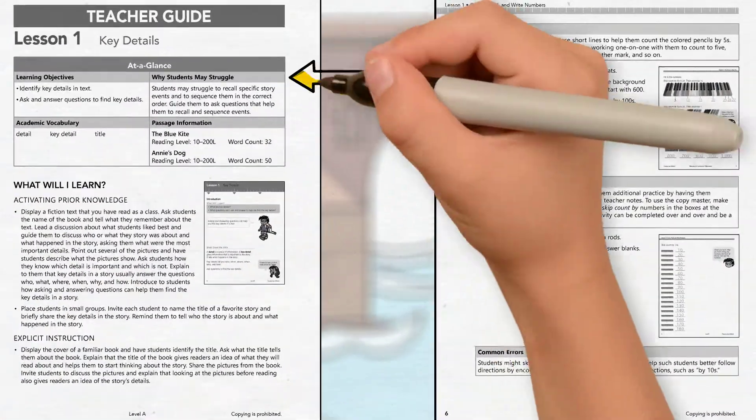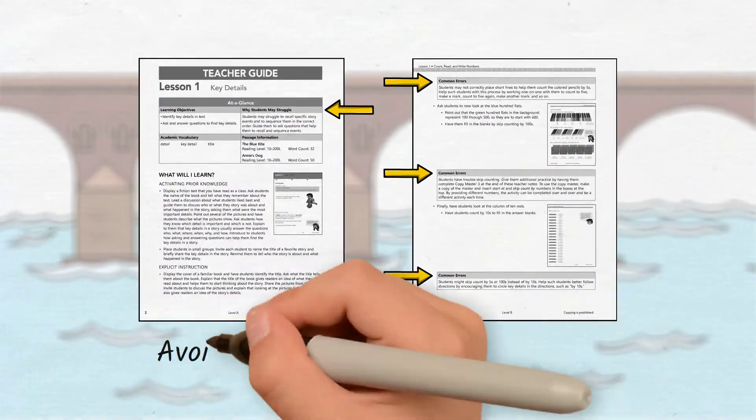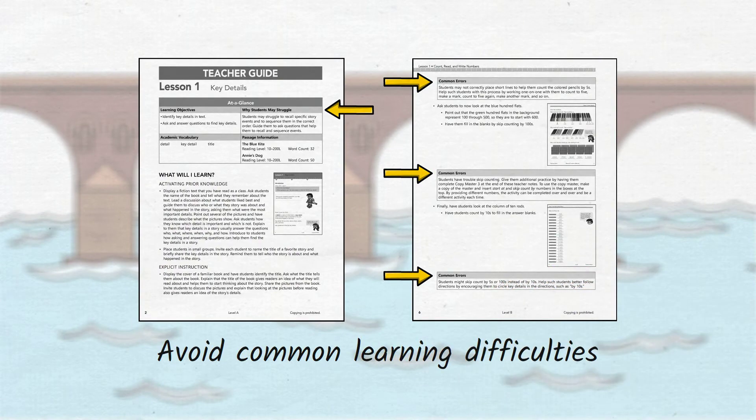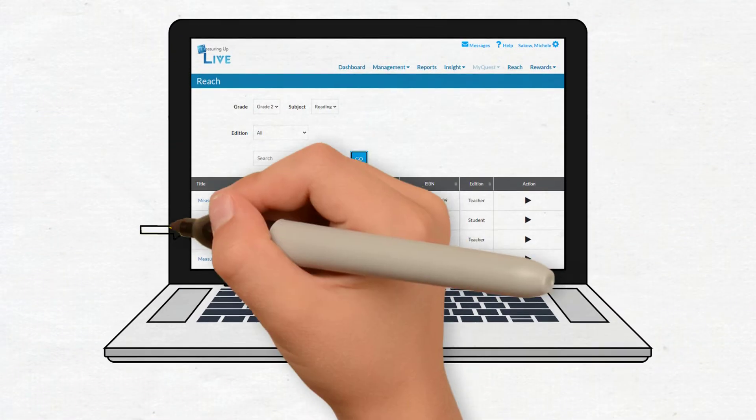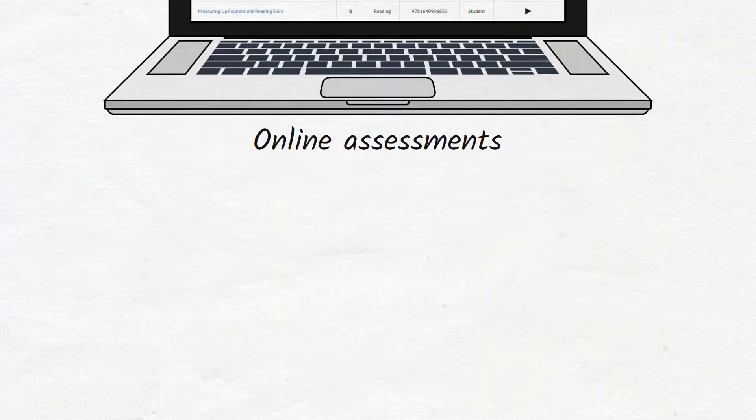Alerts to common errors and mathematics error analysis avoid pitfalls that often lead to learning difficulties. Online pre-, post-, and chapter assessments are an effective way to monitor progress.